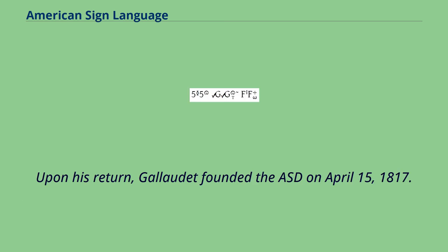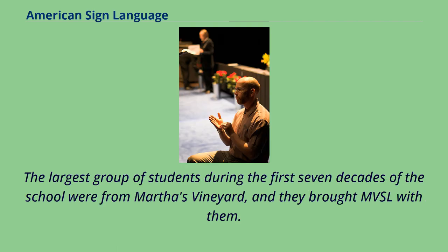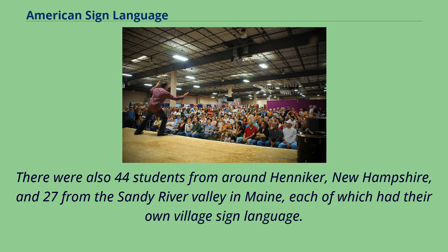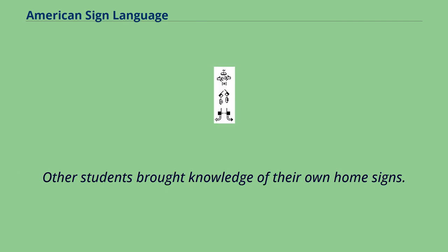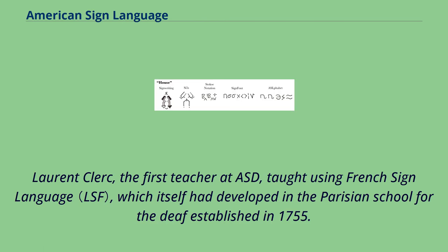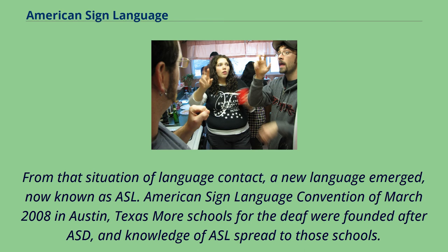Upon his return, Gallaudet founded the ASD on April 15, 1817. The largest group of students during the first seven decades of the school were from Martha's Vineyard, and they brought MVSL with them. There were also 44 students from around Hennecker, New Hampshire, and 27 from the Sandy River Valley in Maine, each of which had their own village sign language. Laurent Clerc, the first teacher at ASD, taught using French Sign Language, which itself had developed in the Parisian School for the Deaf established in 1755. From that situation of language contact, a new language emerged, now known as ASL.